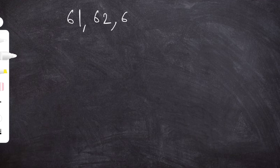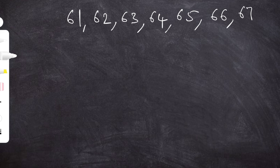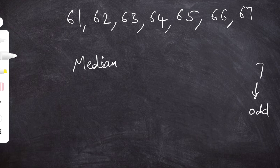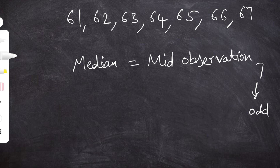Let's see an example where n is odd. Let the given data be 61, 62, 63, 64, 65, 66 and 67. The number of observations is 7, which is odd. So according to the formula, the median equals the middle observation. In the given data the middle observation is 64, so median = 64.